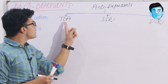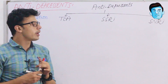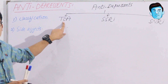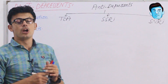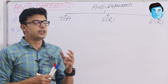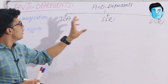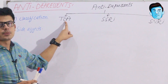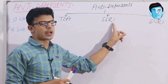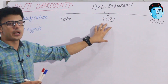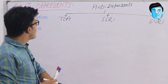Tricyclic antidepressants are mostly preferred in severe depression — this is a very important point. However, if a patient is suffering from mild to moderate depression, doctors mostly prefer selective serotonin reuptake inhibitors.